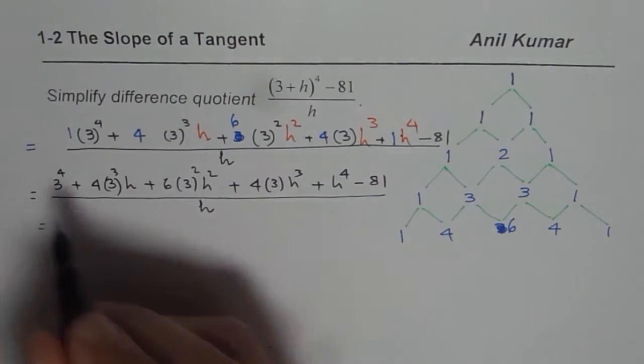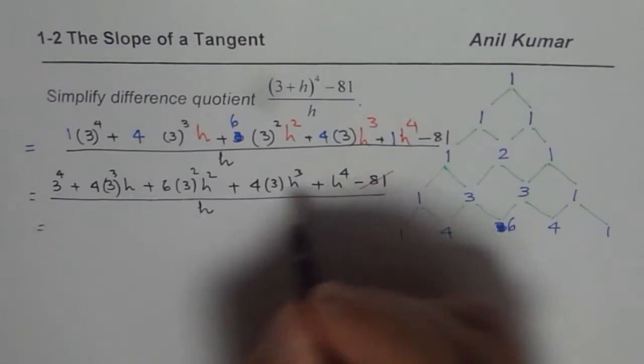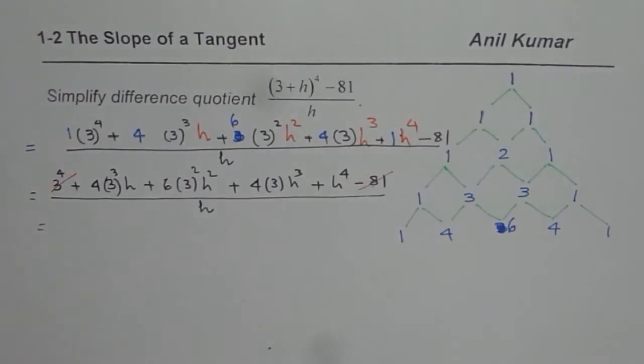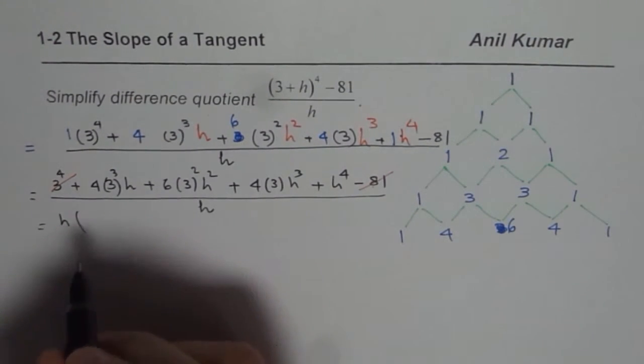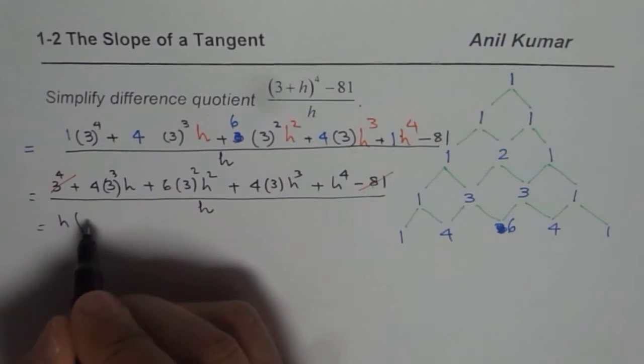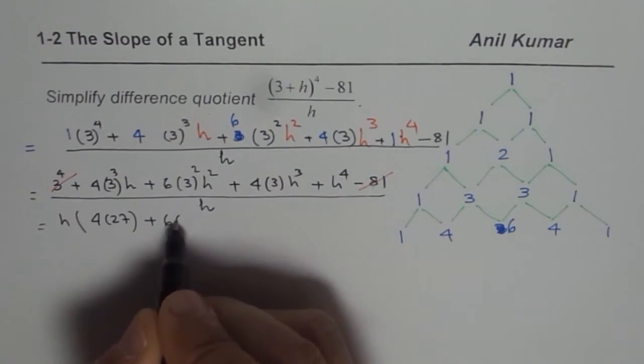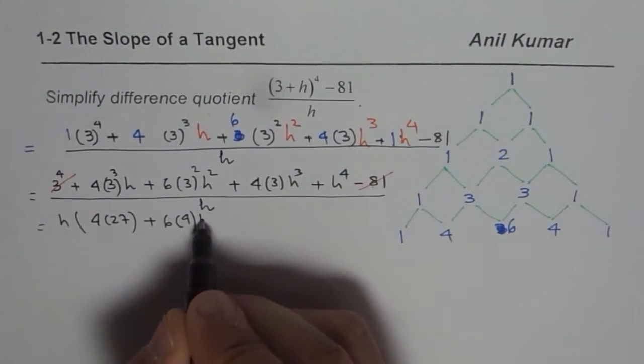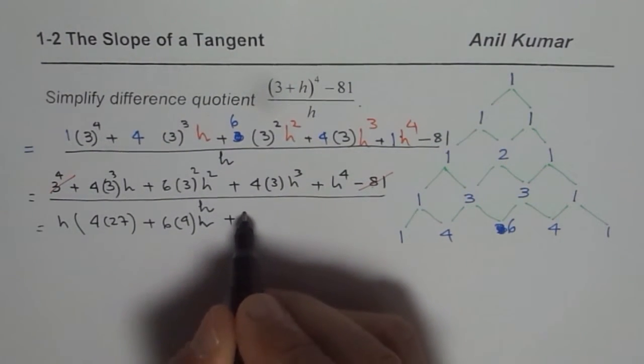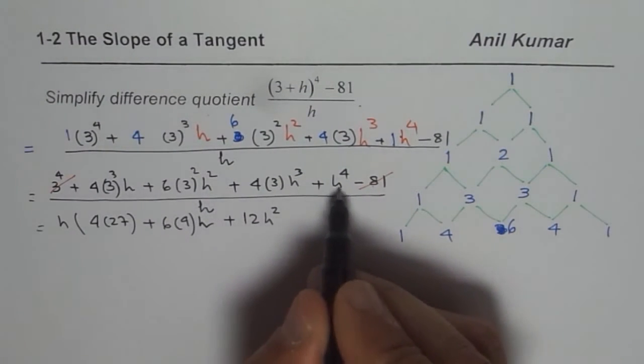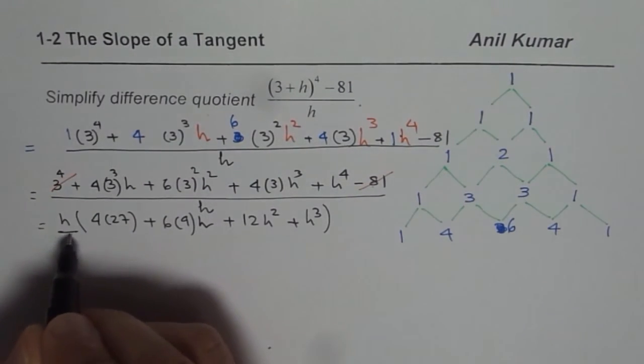Now 3 to the power of 4 is 81. So 81 minus 81 is 0. So what you really get is the terms in between from which you can take h common. So I can take h common here. So let me write h and then I can multiply these. So what we have here is 4 times 27, plus 6 times 9 h, plus 4 times 3 which is 12 h squared, plus h cubed. And then we have this divided by h.